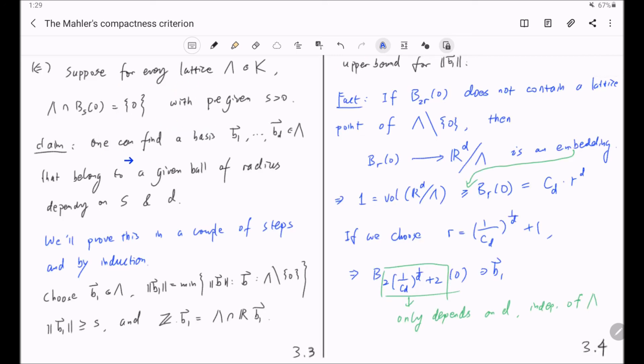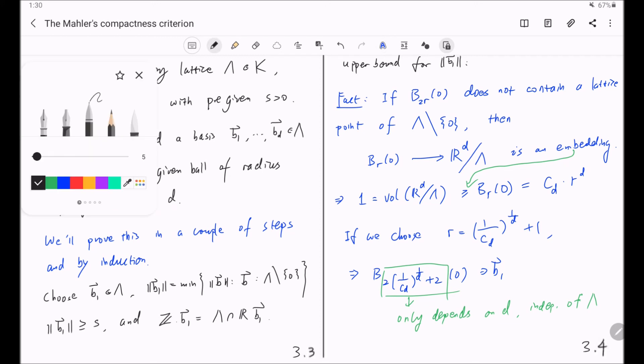Remember, in this claim, we want to find the basis of lambda that belongs to a given ball of radius depend only on s and d. And I should call this claim the superclaim.